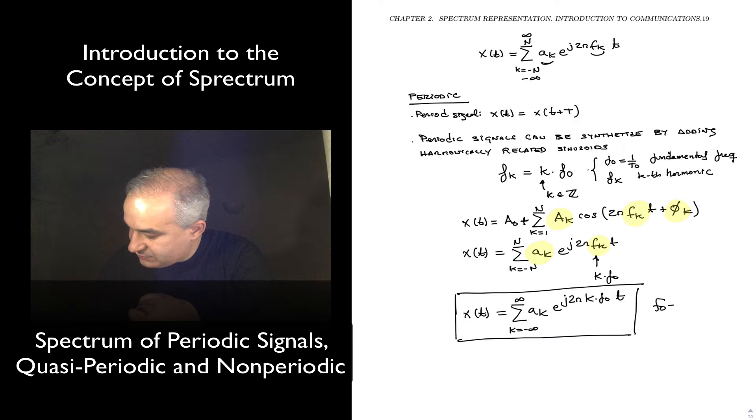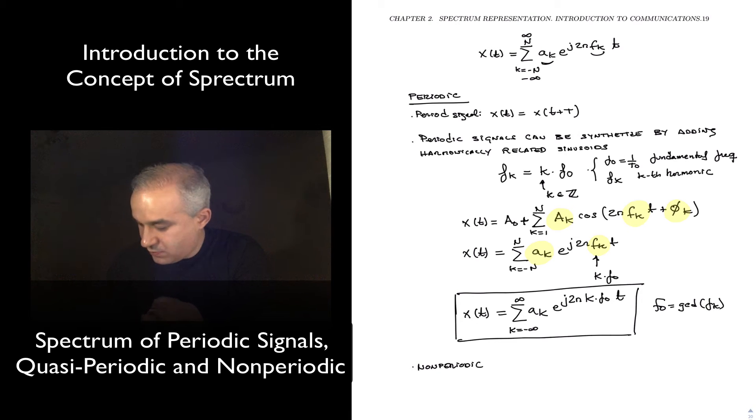Now, k*f_0 is going to be the fundamental frequency, and we have here another result: that if you add harmonically related sinusoids, you end up with a periodic signal, meaning for a non-periodic signal, f_k cannot be expressed as integer multiples of a fundamental frequency.